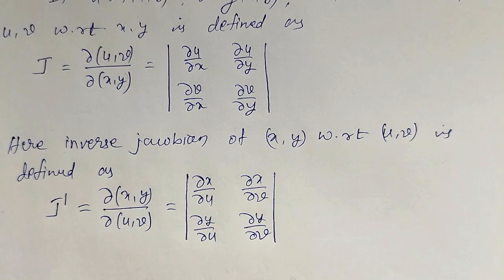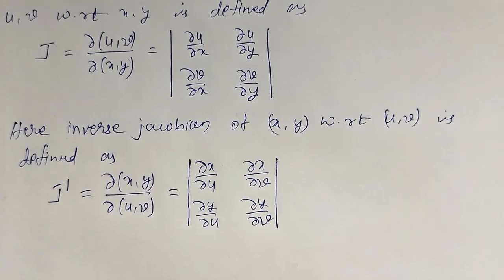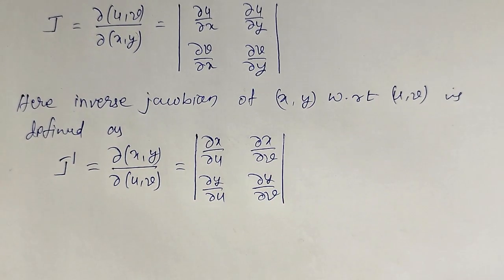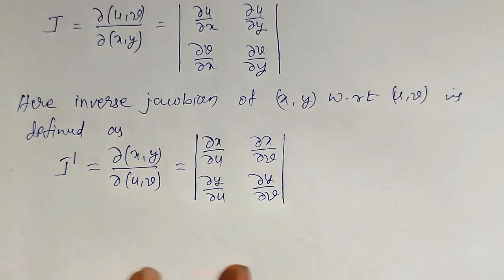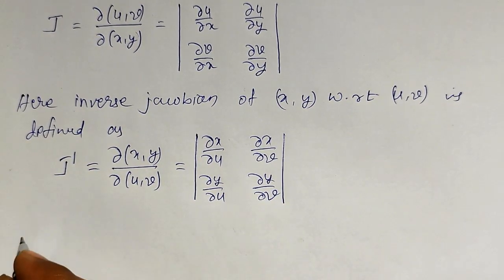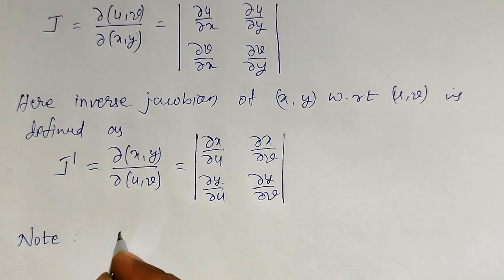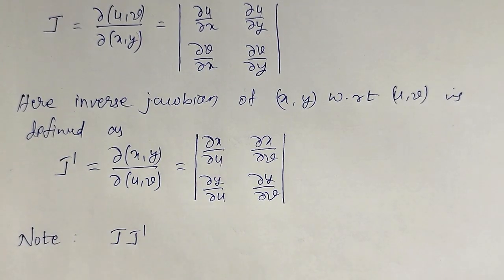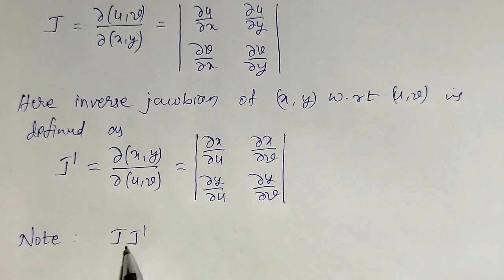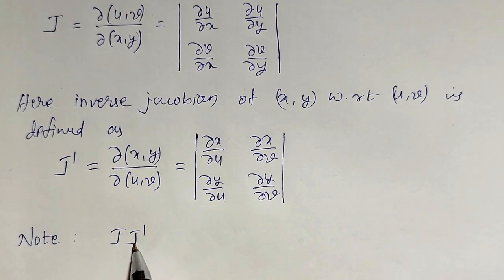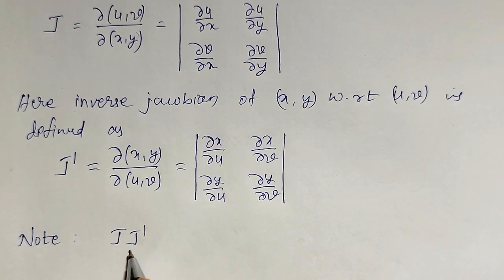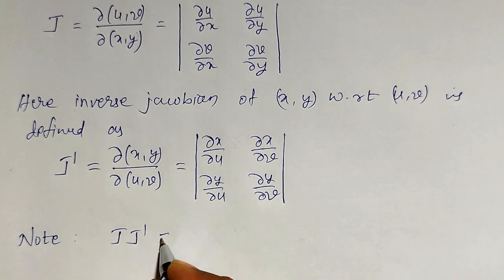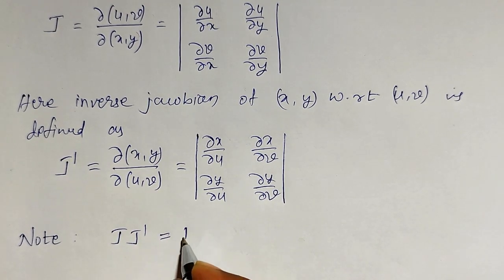We also have one theorem — I am not going to prove it, but you should note it: J into J dash, that is the Jacobian and its inverse Jacobian, will be equal to 1.